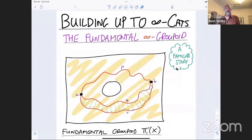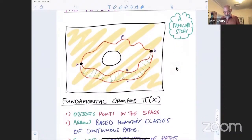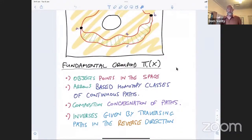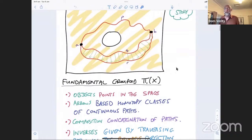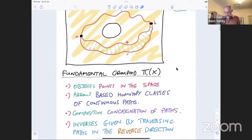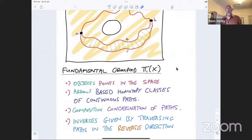And so what we do is we create a thing called the fundamental groupoid. And the fundamental groupoid is a category, and it has, as its objects, points in the space. And as its arrows, it has based homotopic classes of continuous maps. So those are equivalence classes of continuous paths. And then the way that we compose these things is just simply to concatenate paths together.